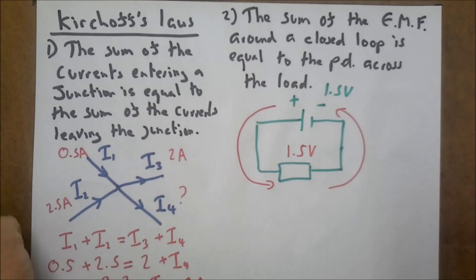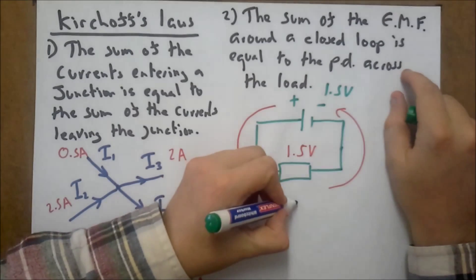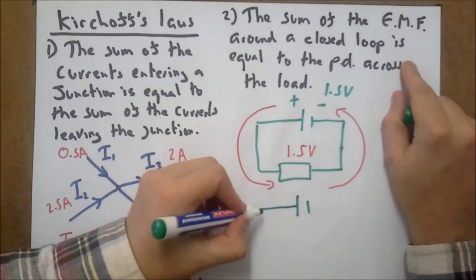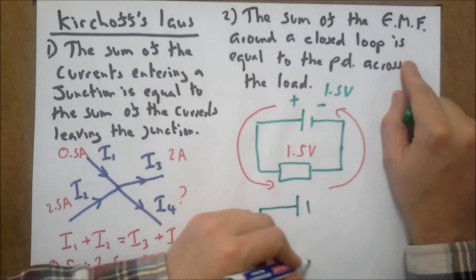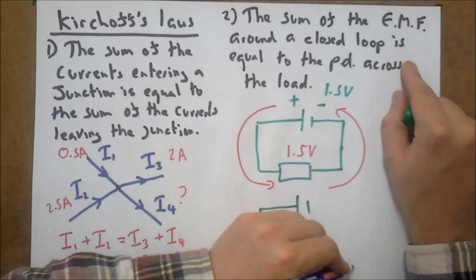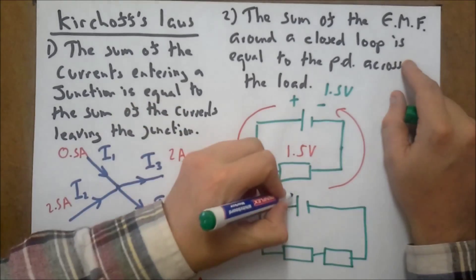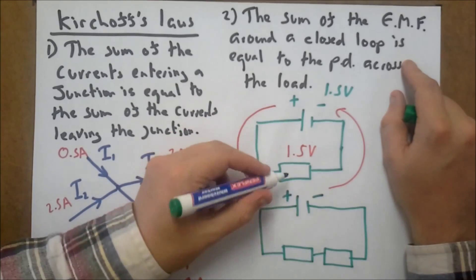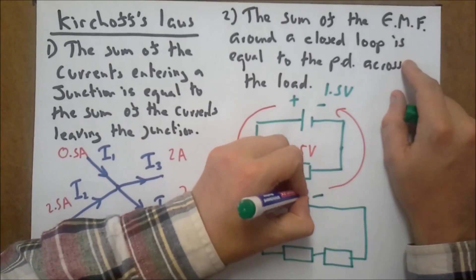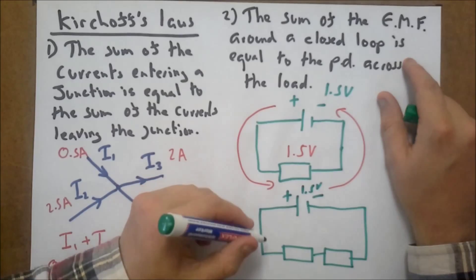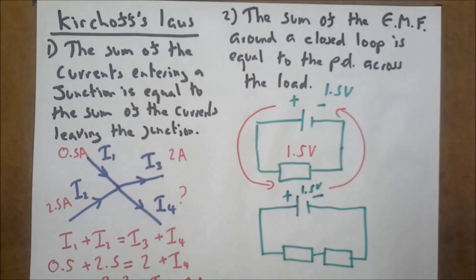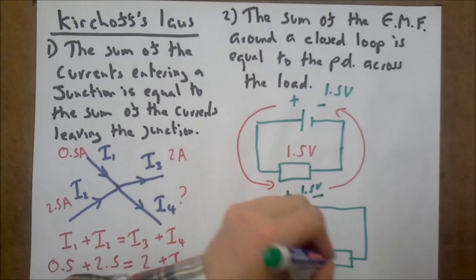Now, I might have a different circuit where I've got one cell with two resistors, and just for this example, we're going to give them equal resistance. We've still got 1.5 volts. Now, this time, as long as my resistors are equal, let's just call them R.